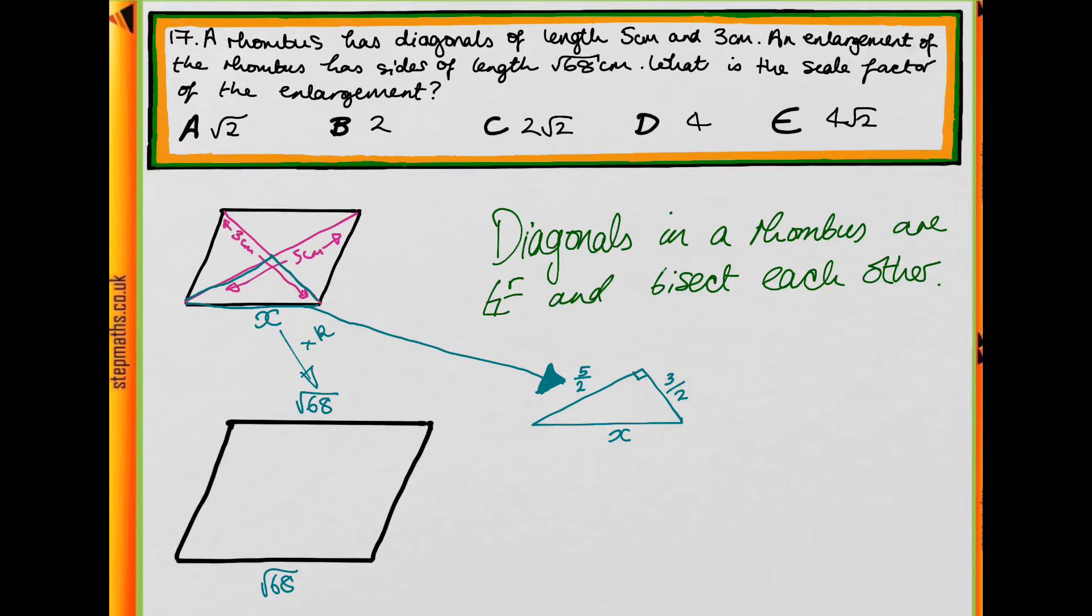It looks something like this. We have a right angle here, which we know from this fact. And we know that this length is half of the diagonal because they bisect. And so is this length. So this is 5 over 2, this is 3 over 2. So from this, can you use Pythagoras' theorem to try and find X? Pause the video and have a go at doing this now.